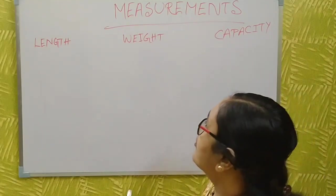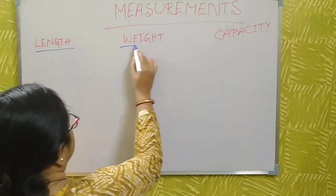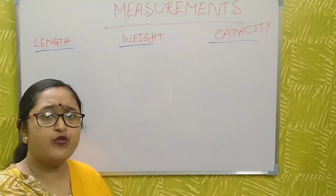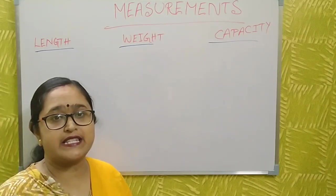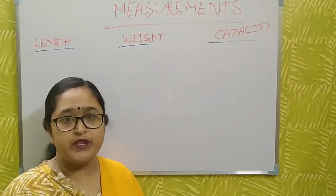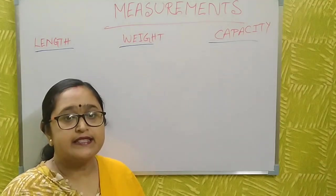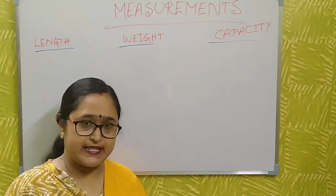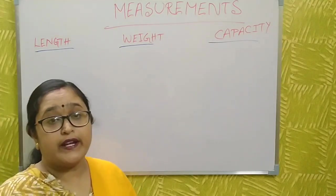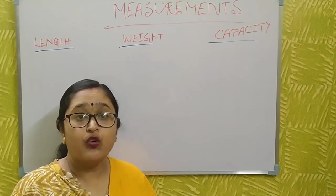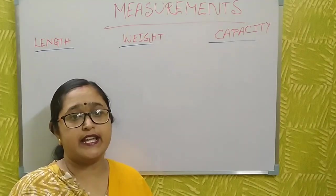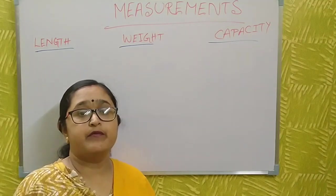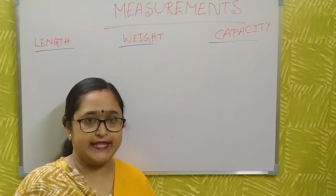Measurement — all of you know — is something we use in daily life. You measure the length and the distance by meter and kilometer. The length is measured by meter and kilometer. The weight of potato, weight of rice, any grocery item — anything you can measure. Weight you can measure by kilogram and gram.